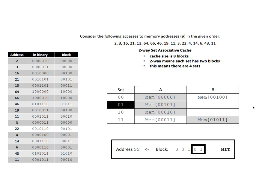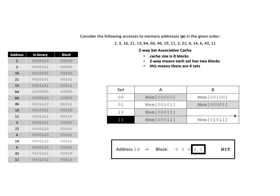Next we access block 00101 — that's a hit because what's in set 01 matches the block containing address 22. The following access is block 00001; we look in set 01, but the block there doesn't match, so it's a miss and we add it to the available space. Then we access block 0011 — a hit, and we note it's now the most recently used in that set. Then we access block 00001 again — a hit — and update it as the most recently used in that set.